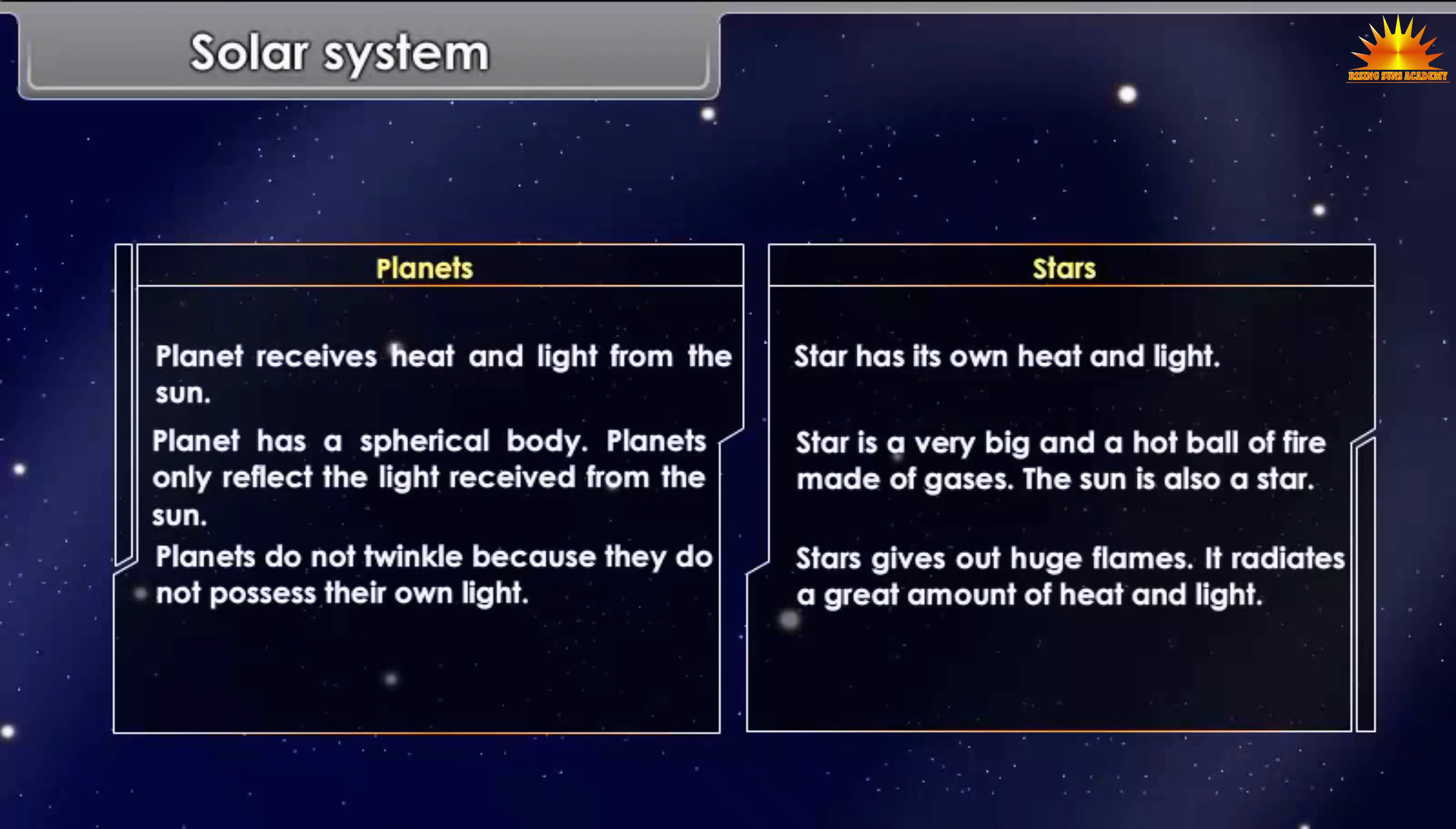Stars give out huge flames. They radiate a great amount of heat and light. There are eight major planets. Our Earth is also one of them. Stars are very far from us.